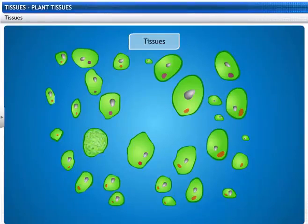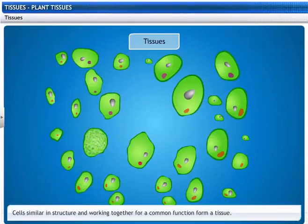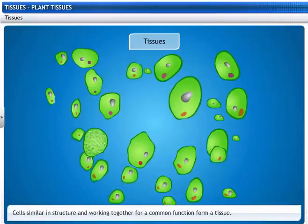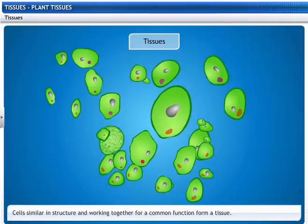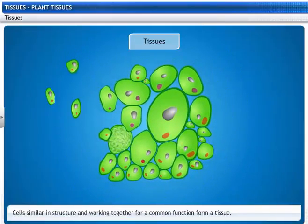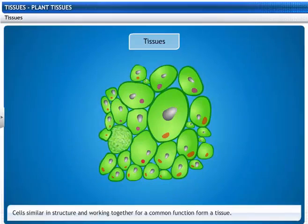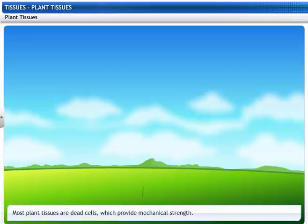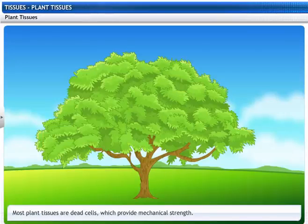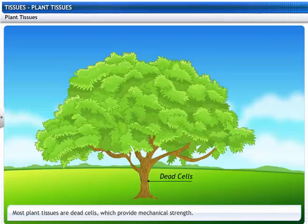What are tissues? A group of cells that are similar in structure and that work together to achieve a particular function forms a tissue. Plants are stationary, and so some of the tissues they have are dead cells, which provide mechanical strength.